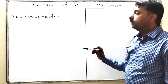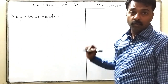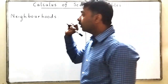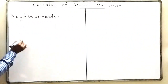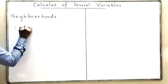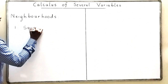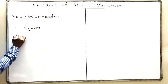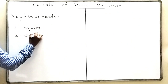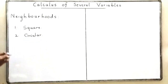To move ahead, we are going to need the next concept of neighborhoods. Now there are two types of neighborhoods in this particular course: first is a square neighborhood, and second is a circular neighborhood.